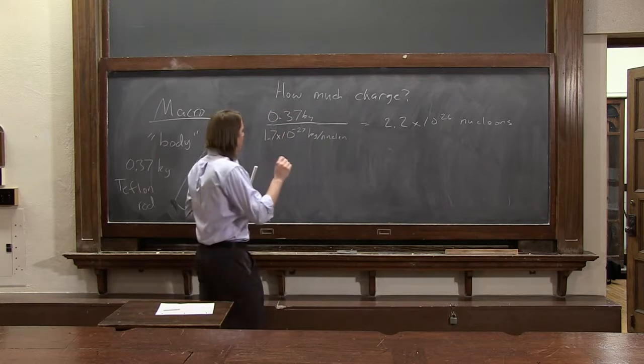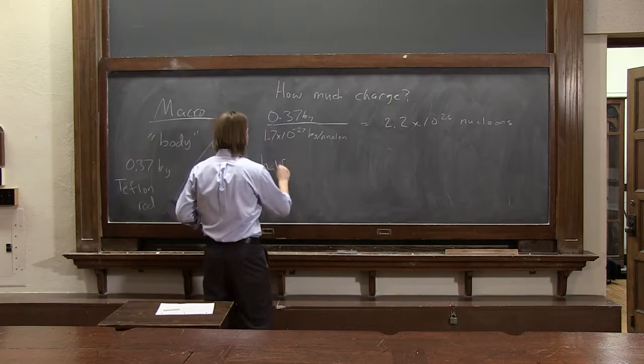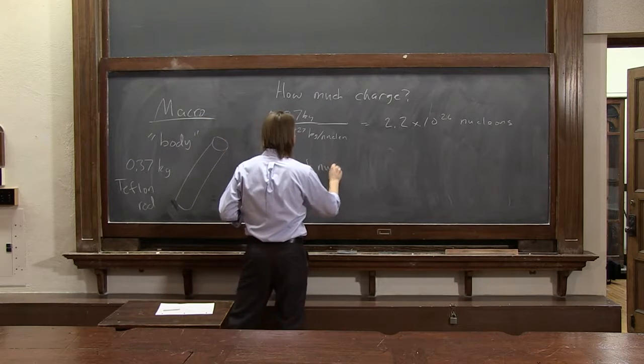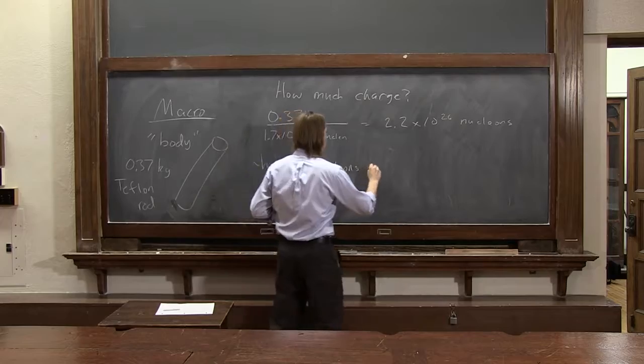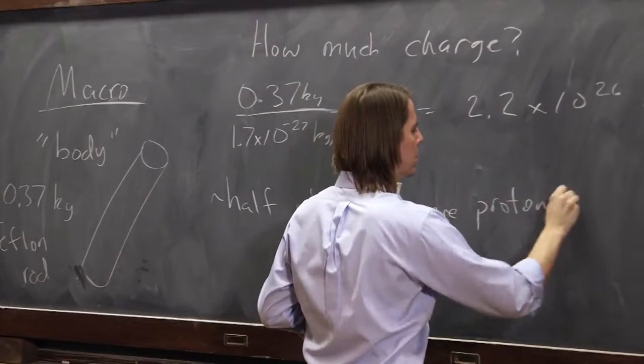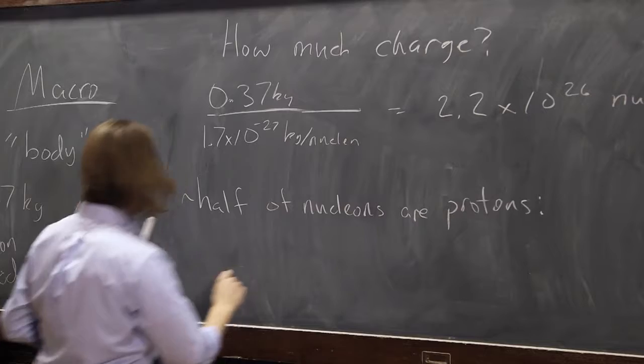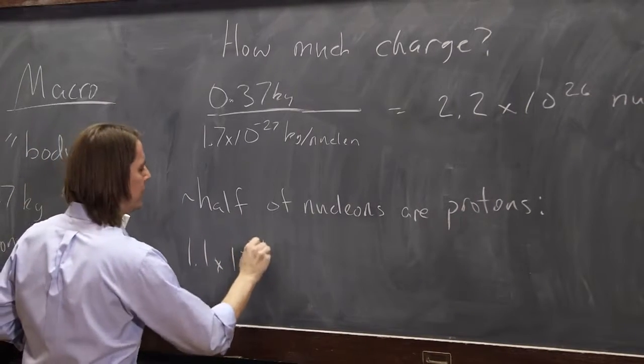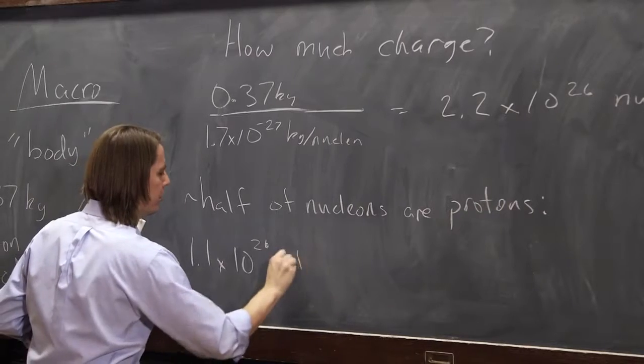So if that's true, then we know that roughly half of the nucleons are protons. So we know we have 1.1 times 10 to the 26 protons.